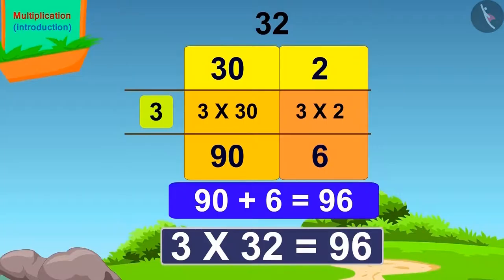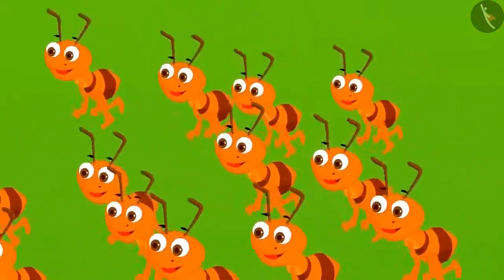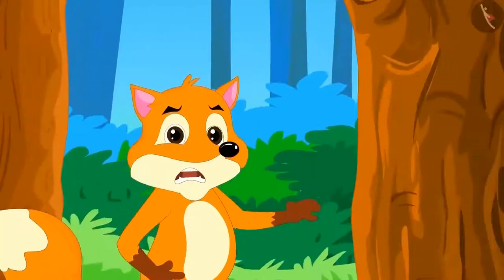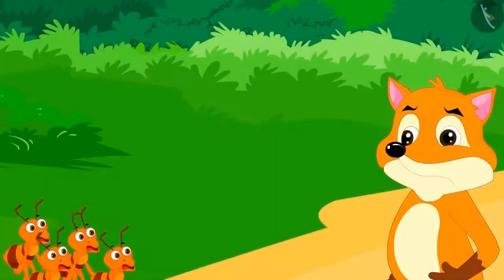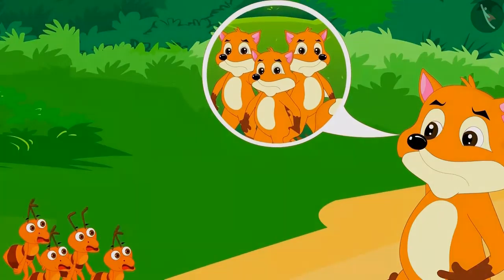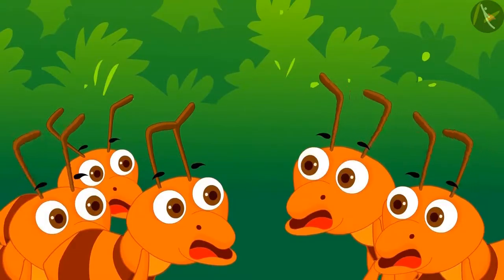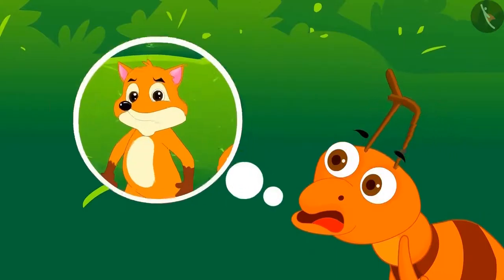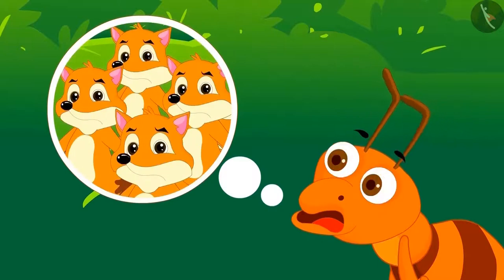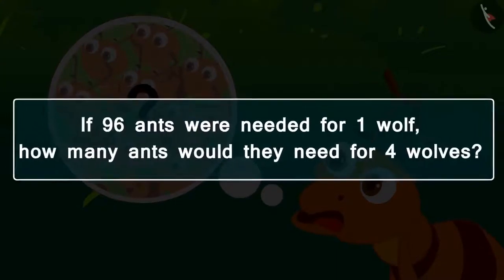3 times 32 is 96. There were a total of 96 ants. When the wolf fell asleep, the ants attacked him the whole night. Every group bit him severely. The wolf ran away from there in pain. But he told the ants that he would bring three more of his friends the next day. The ants got scared, but they decided to fight till the end. Now they are thinking: if 96 ants were needed for one wolf, how many ants would they need to attack four wolves? Can you help the ants by solving this multiplication question?